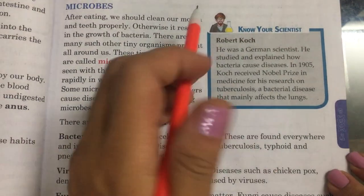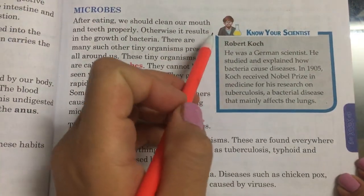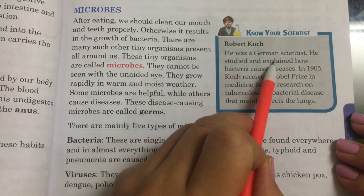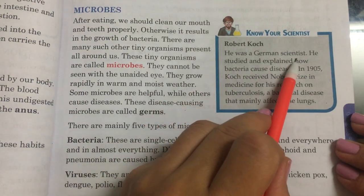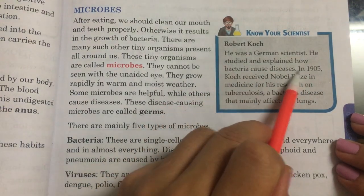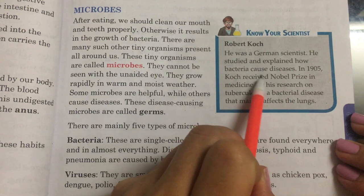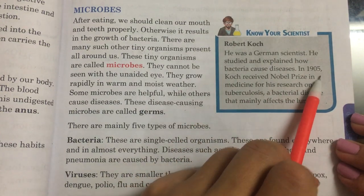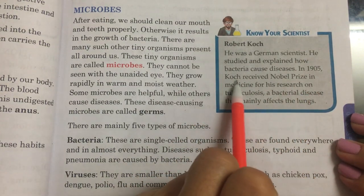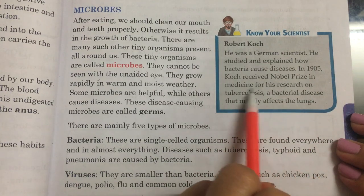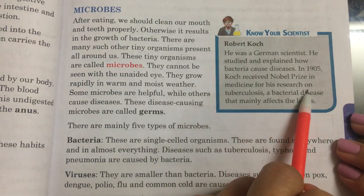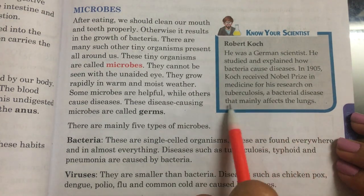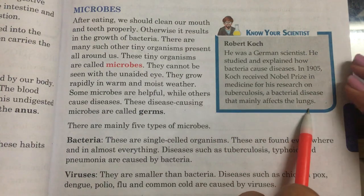Know Your Scientist: Robert Koch. He was a German scientist who studied and explained how bacteria cause diseases. In 1905, Koch received the Nobel Prize in Medicine for his research on tuberculosis, a bacterial disease that mainly affects the lungs.